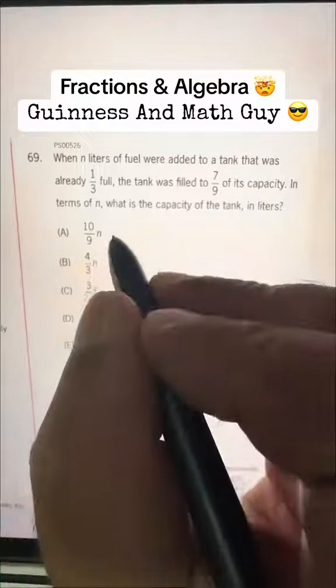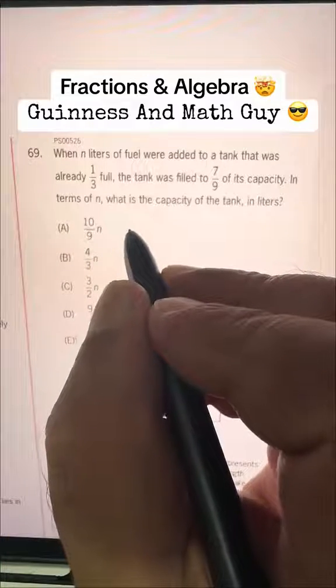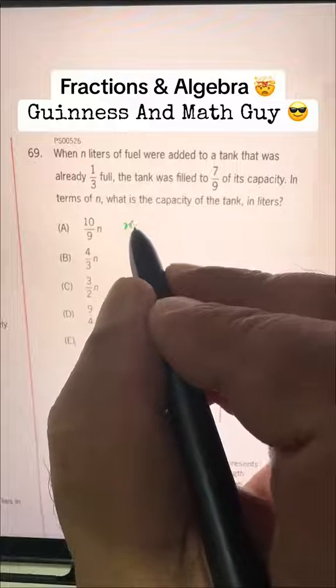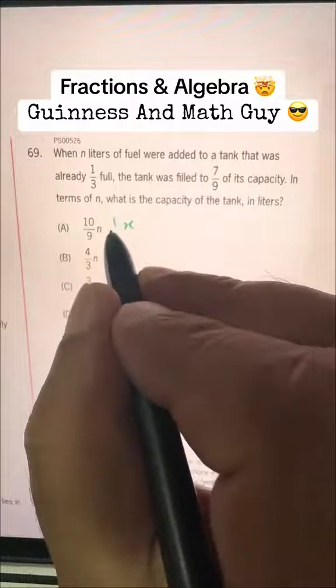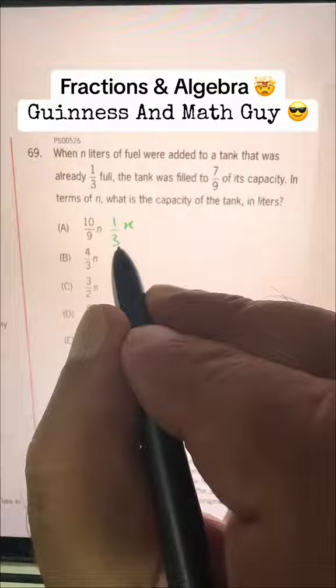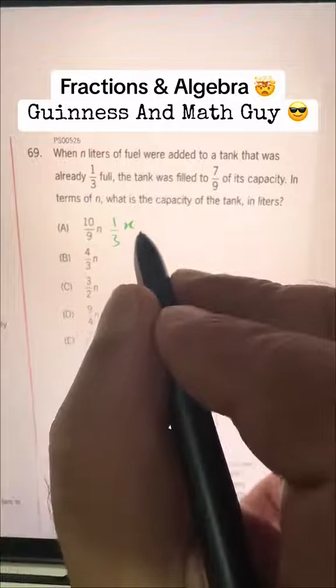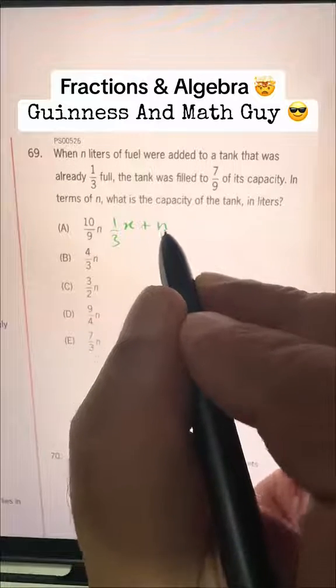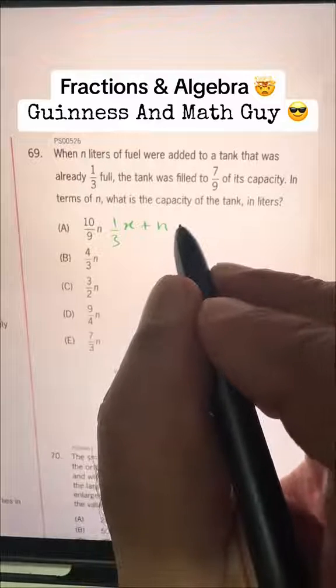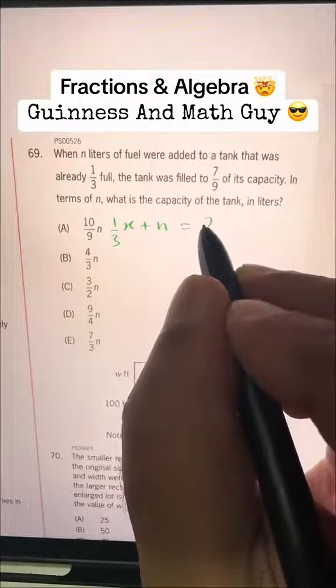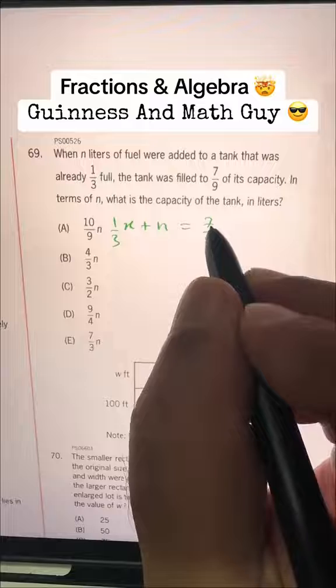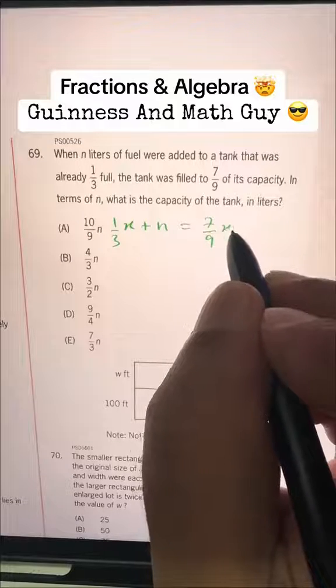Let's say the full capacity of the tank is X liters and it's already one-third full. Then, N liters are added and it's now 7 over 9 of its capacity full.